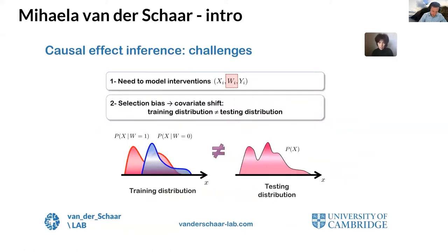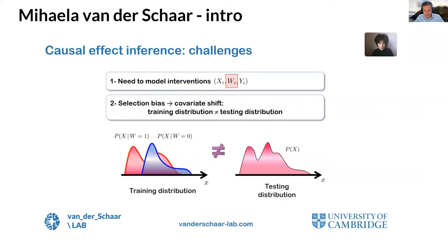We cast this problem in the framework of potential outcomes defined by Neyman and Rubin. We have observational data containing patient features, treatment assignment, and potential outcomes. In the binary treatment setting we have two potential outcomes: the treated outcome and the control outcome. We observe the factual outcome but not the counterfactual outcome — we will need to estimate that. We are estimating the individualized treatment effect given the unique characteristics of the patient. The focus is not on average treatment effects but on individualized treatment effects, also known as conditional average treatment effects (CATE), conditioning on patient features X.